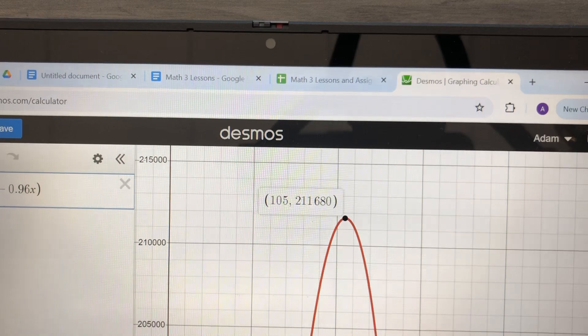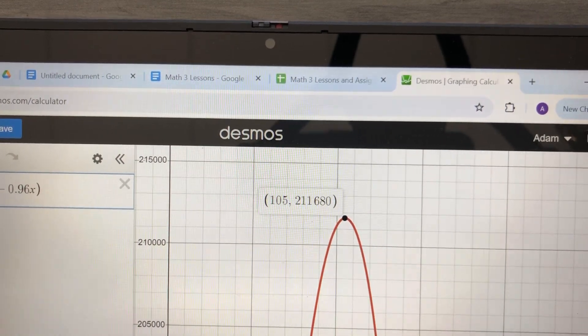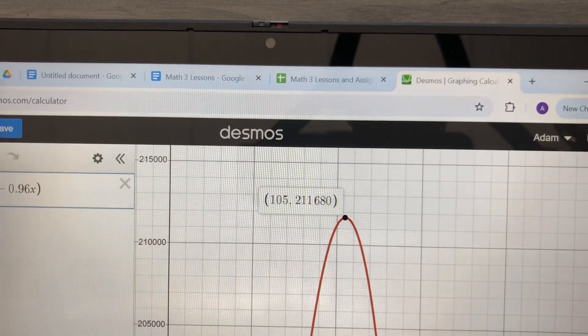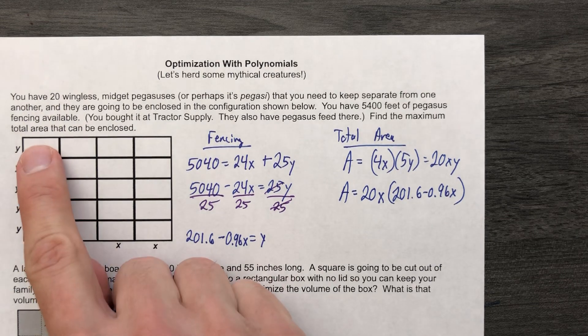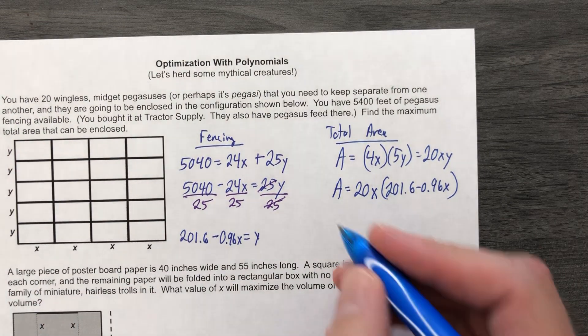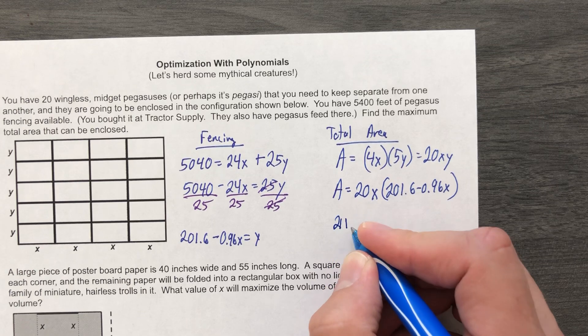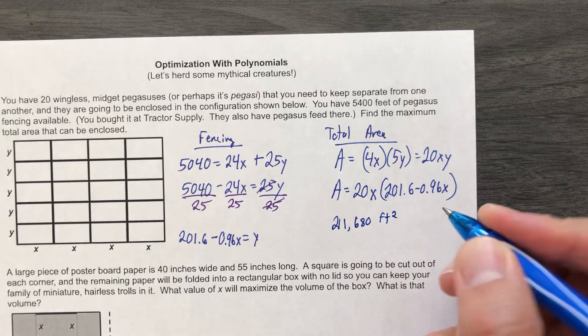Okay. So 105, 105. What's 105? That's the X value. That's not what they asked. But 211,680 is the output. That's what they wanted to know. Find the maximum total area that can be enclosed. 211,680 what? Well, we're dealing with area. So it's going to be square feet.